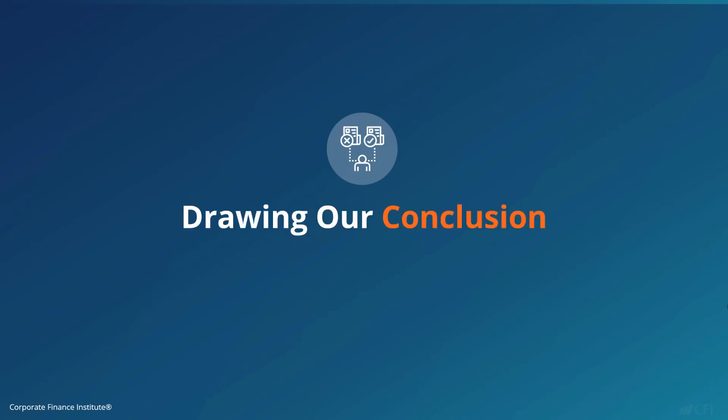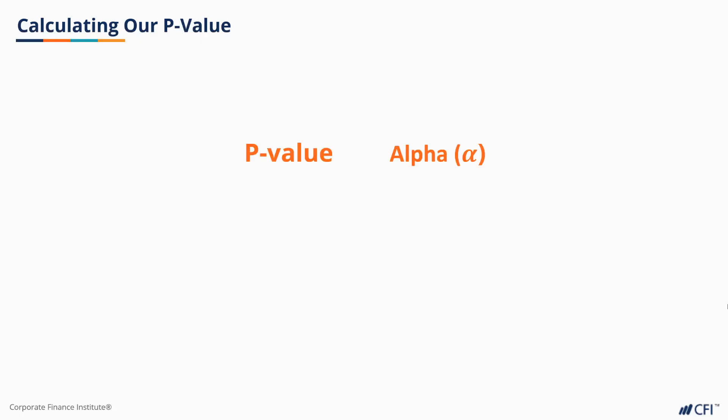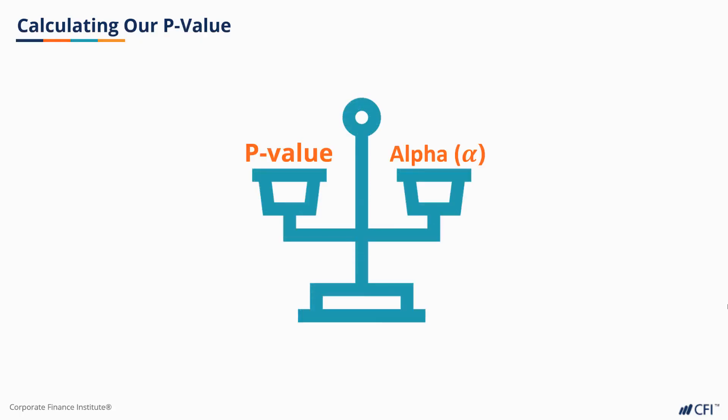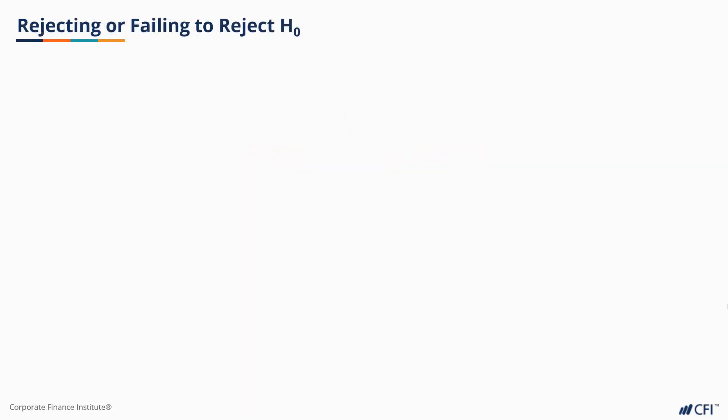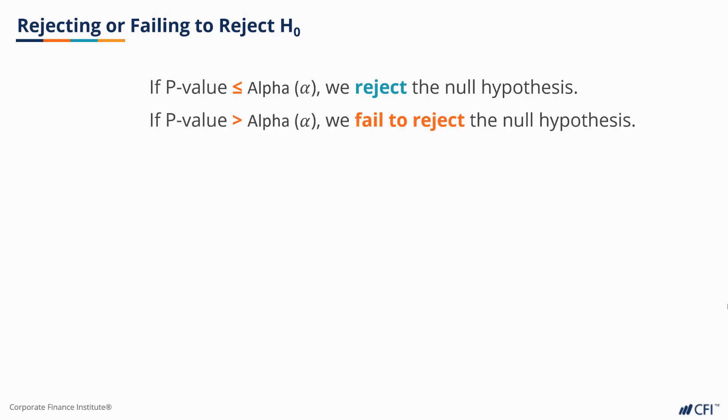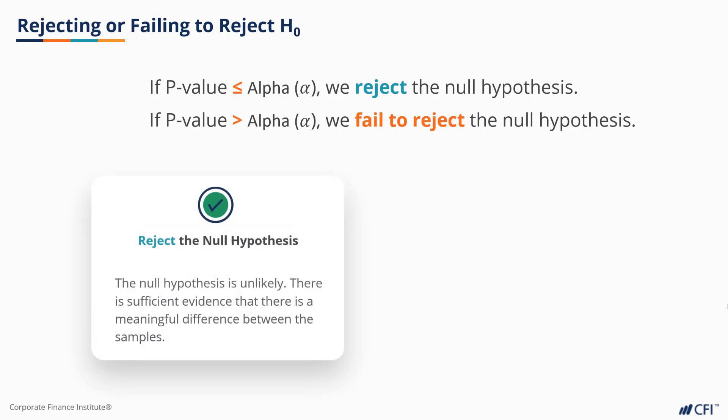We've come to the final step in our hypothesis test: drawing our conclusion. To do this, we will compare our p-value to our alpha. If our p-value is less than or equal to our alpha value, we reject the null hypothesis. If our p-value is greater than our alpha value, we fail to reject our null hypothesis.